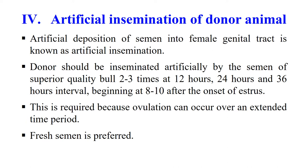The next step is artificial insemination of the donor animal — the artificial deposition of semen into the female genital tract. The donor should be inseminated artificially with semen of a superior quality bull 2 to 3 times at 12-hour, 24-hour, and 36-hour intervals beginning 8 to 10 days after the onset of the estrus cycle, because ovulation can occur over an extended time period. Fresh semen is generally preferred, though cryopreserved semen may also be used.